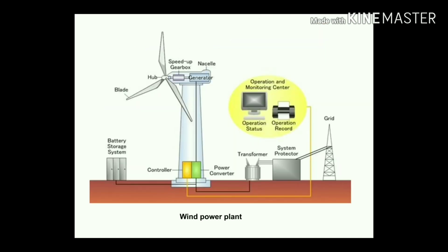Wind energy: by the flow of high-velocity winds, the blades of the windmill rotate. They are connected with a hub and speed up through a gearbox. Different gear mechanisms are used, and the output is fed to a generator to produce electricity. So the flow of a stream of air is used to develop electricity.